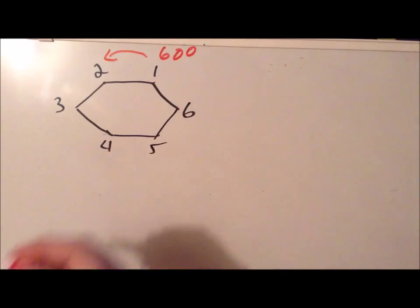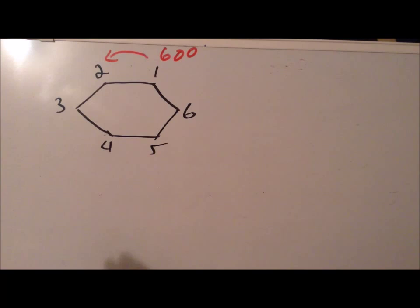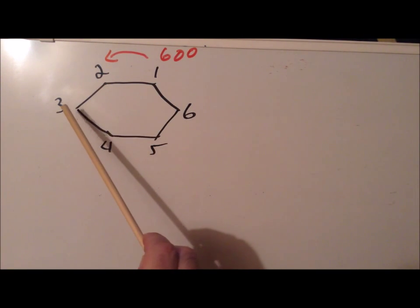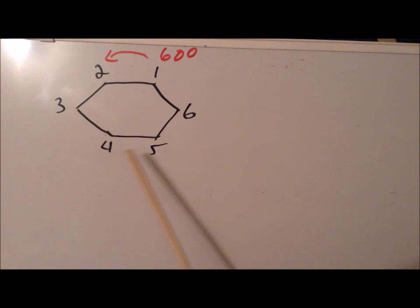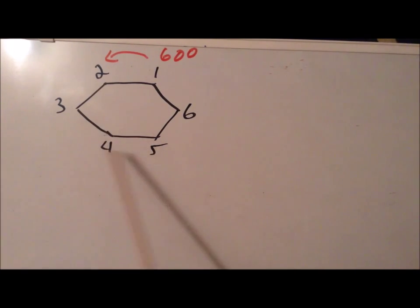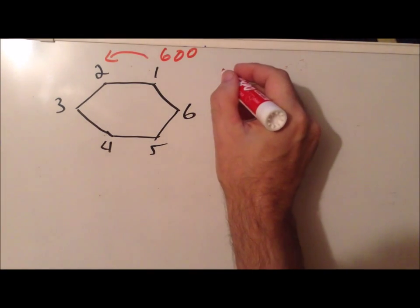This 60 degree rotation takes vertex 1 to vertex 2, 2 goes to 3, 3 goes to 4, 4 goes to 5, 5 goes to 6, and 6 goes to 1. The resultant shape after turning it by 60 degrees looks exactly the same as before. Therefore, this shape has a C6 rotation as a symmetry operation.